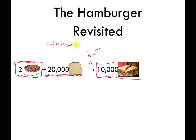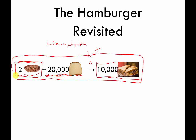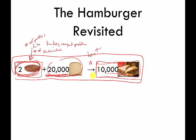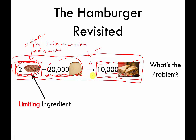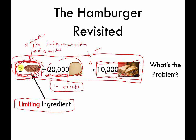It's called a limiting reagent problem because the number of patties limits the number of sandwiches I can make. I can have a billion slices of bread, but since I only have a few patties, that limits how many sandwiches I can make — it limits it to two. Informally, we'd say the patties are the limiting ingredient. The other term we use is that the bread is in excess — we have more than we need.